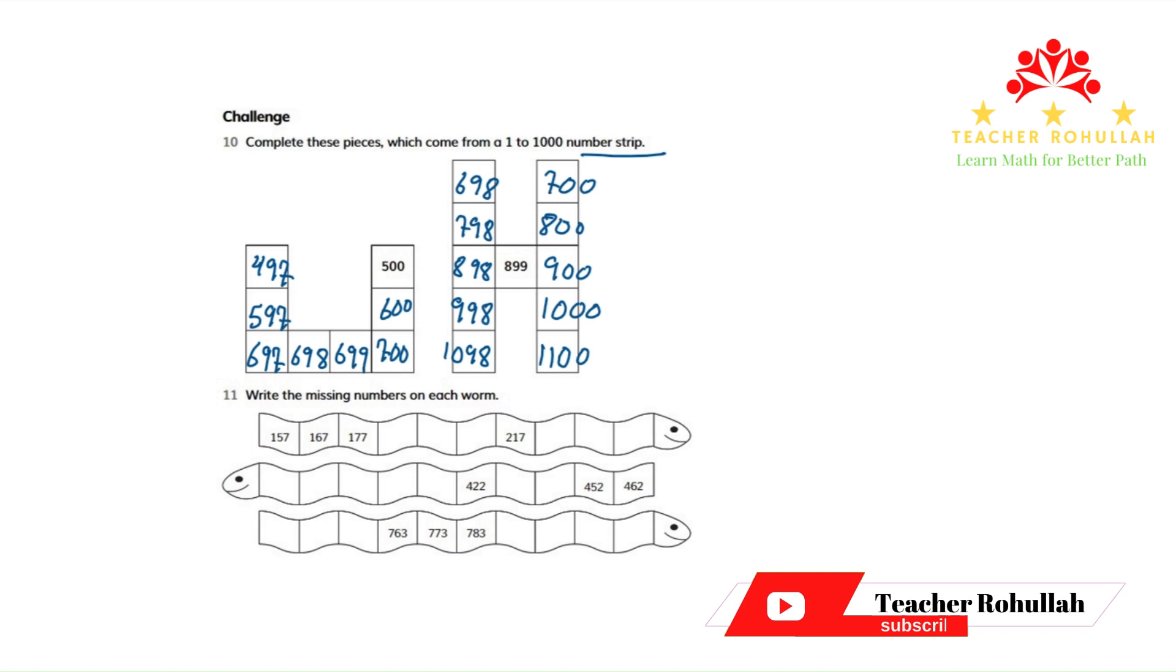Let's now move to question number 11. It says write the missing numbers on each worm. Some three worms are given here and we have to find the missing numbers. How can we find them? We can easily find them if we know the relationship between the first three numbers which are given.